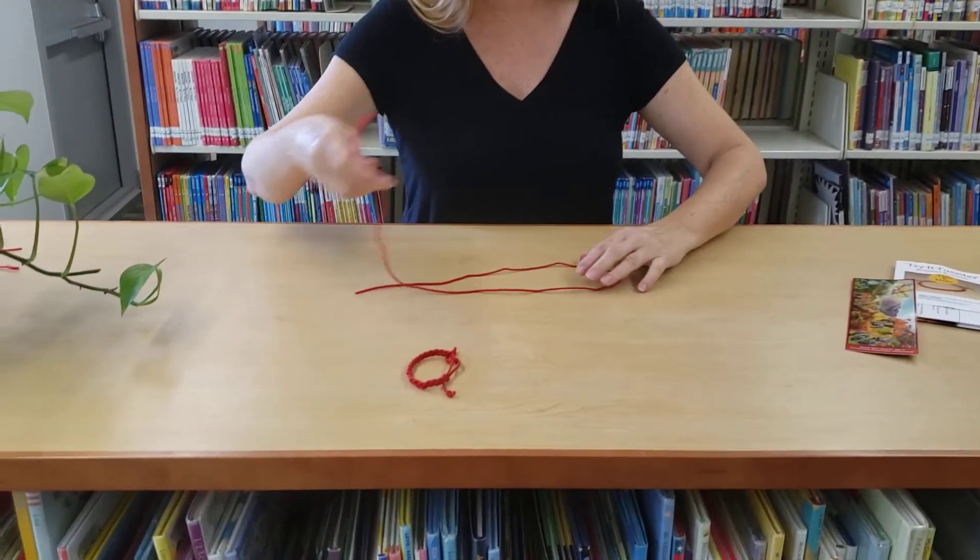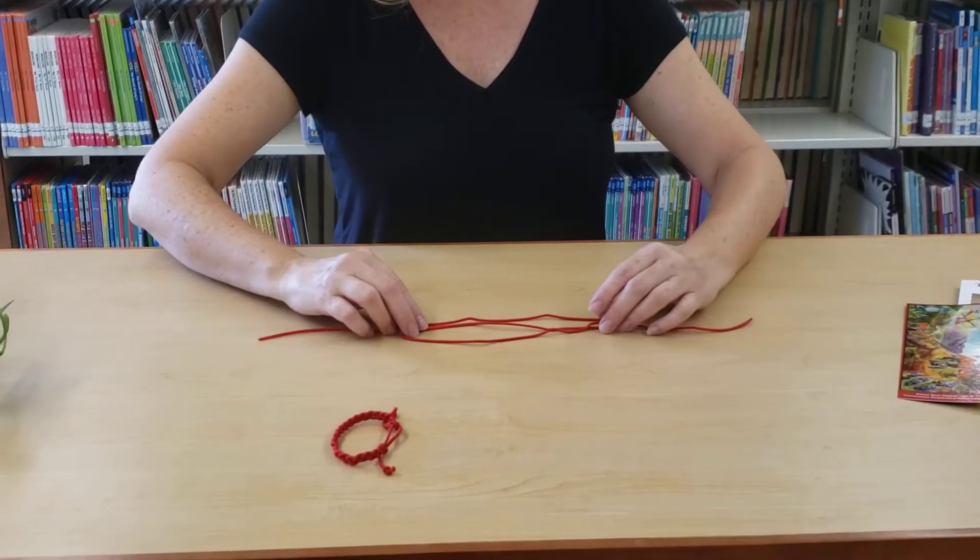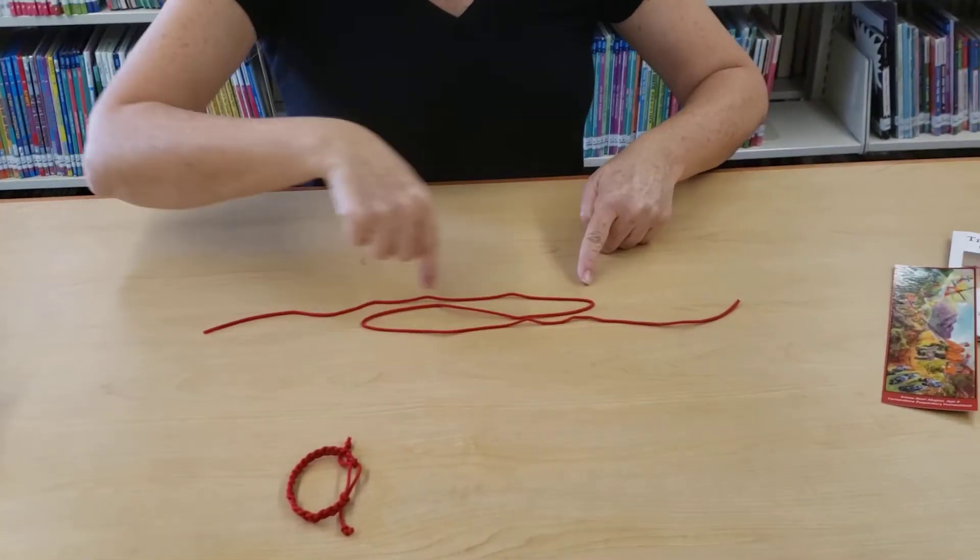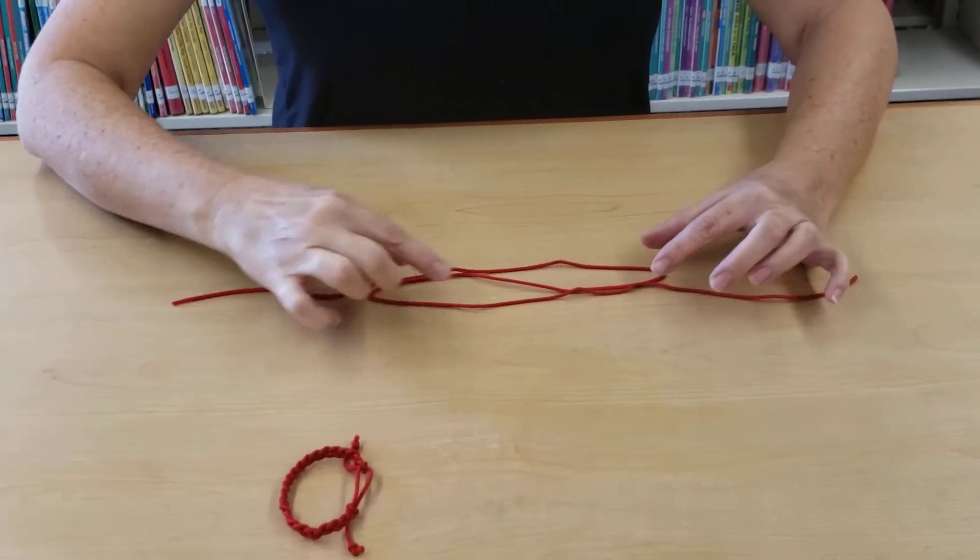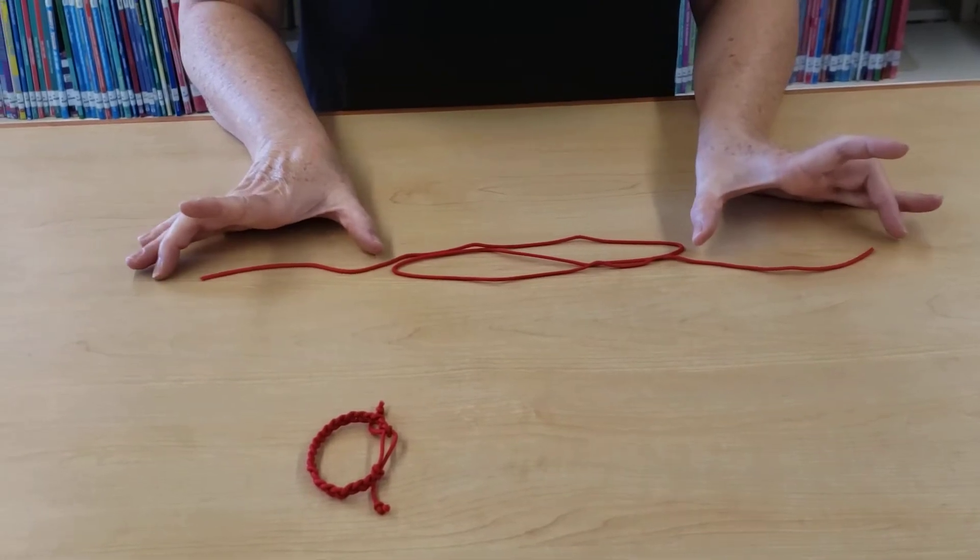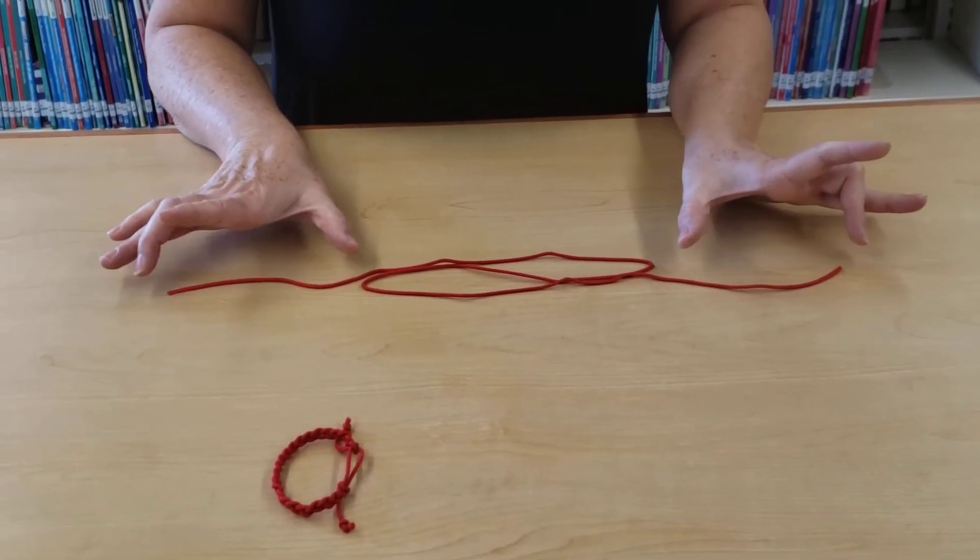The first thing you're gonna do is lay it out and fold it over like this, so you want to make sure you have an overlap in the center. So your cord will go like this and you want to have three pieces right in the center, about seven inches and about the same length on either end.